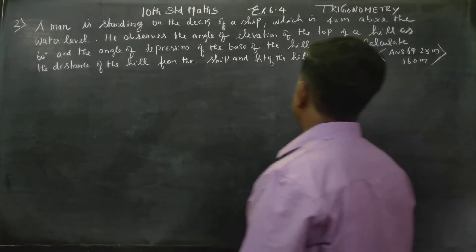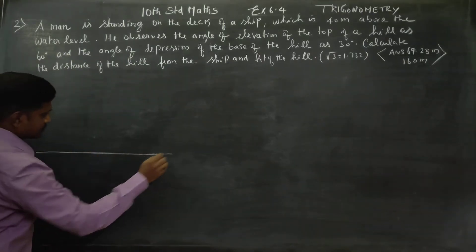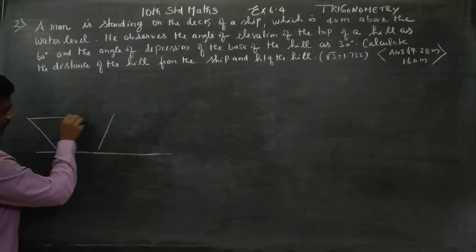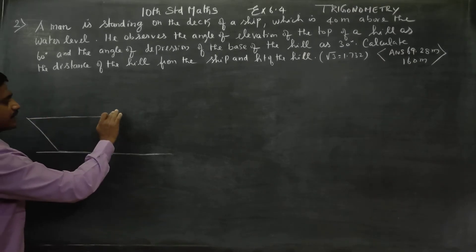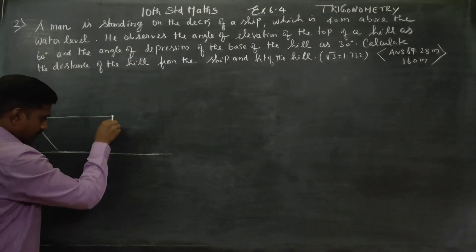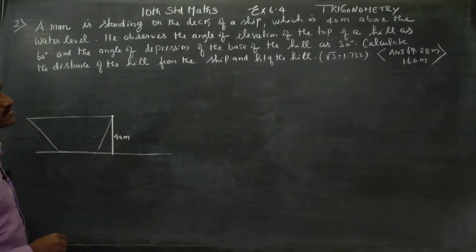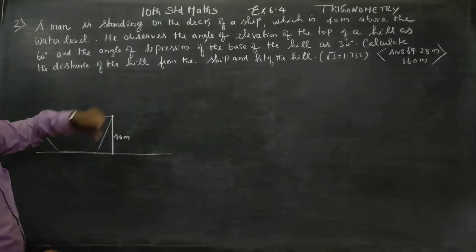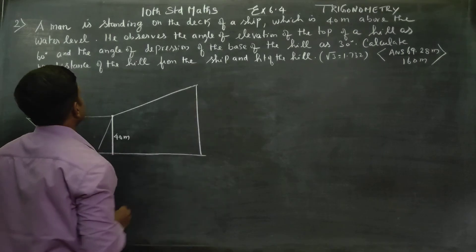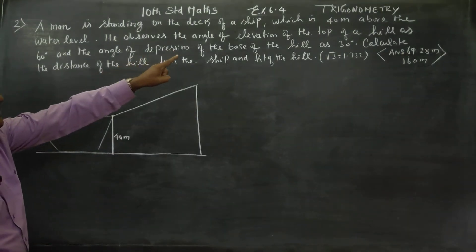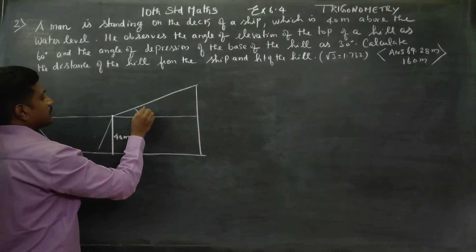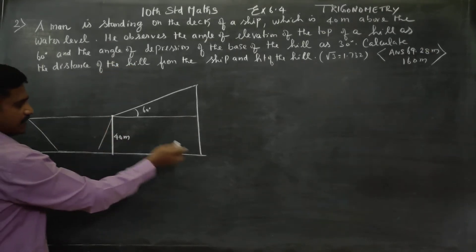A man is standing on the deck of a ship which is 40 meters above the water level. He observes the angle of elevation of the top of the hill is 60 degrees. There is a hill, and looking at the angle of elevation of the top of the hill, the angle is 60 degrees.